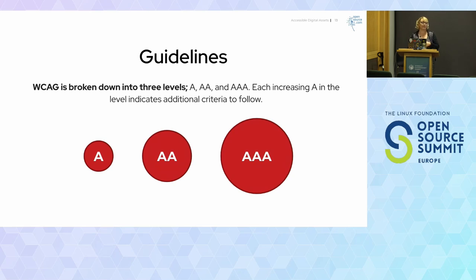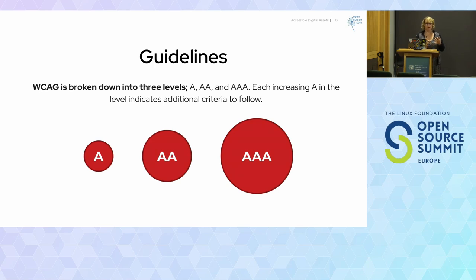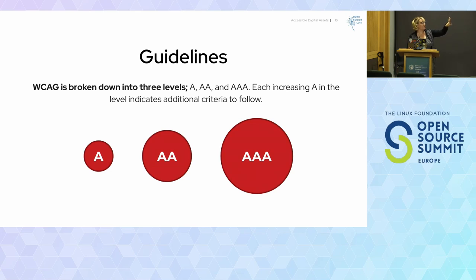Then we have triple A — this is our optimal compliance, which means your website is accessible to the maximum amount of people possible, whether or not they live with disabilities. That triple A level indicates the highest level of usability, because accessibility and usability hold hands really well. So double A is your acceptable compliance and triple A is designing for everybody.